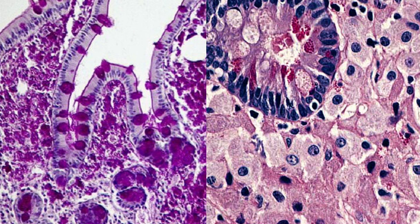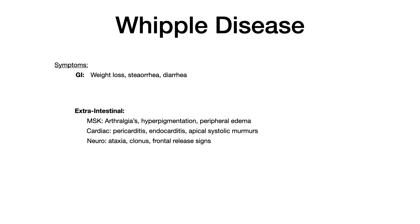On your exam, you'll see the foamy macrophages in histological images. Even if the image looks unfamiliar, you can appreciate that it's not normal histology — that's an image of foamy macrophages. The symptoms will include the standard GI findings we've discussed throughout this video — weight loss, steatorrhea, diarrhea — but the extra-intestinal symptoms are how you seal the diagnosis, since the exam will likely give you symptoms and ask you to work backwards to identify the bacteria.